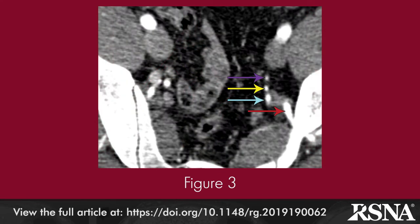Figures three through eight demonstrate these arteries and their vascular territories as seen on CT pelvic angiography. An axial CT angiogram at the level of the greater sciatic foramen shows localization and visualization of the four major pelvic arteries. From anterior to posterior, they are the obturator (purple arrow), internal pudendal (yellow arrow), inferior gluteal (blue arrow), and superior gluteal (red arrow) arteries.